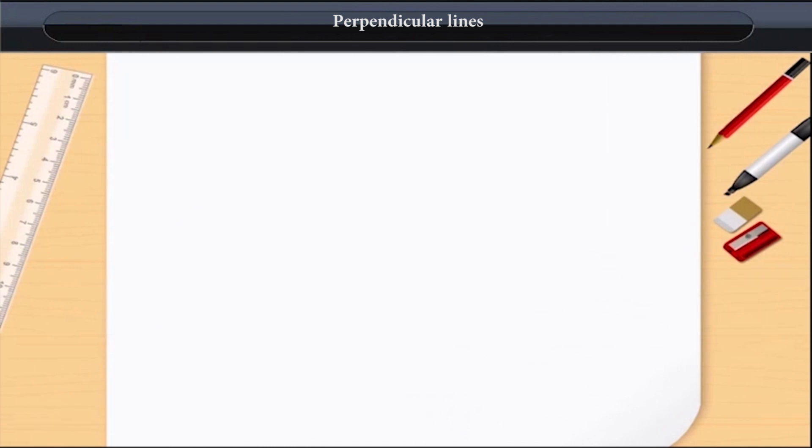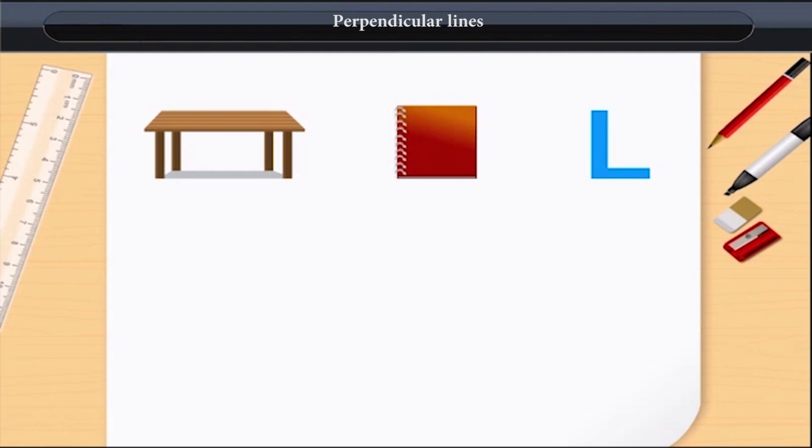Please pay attention to all these pictures. A table, a book, and the English alphabet L. All of them contain two intersecting lines.